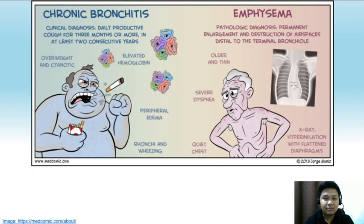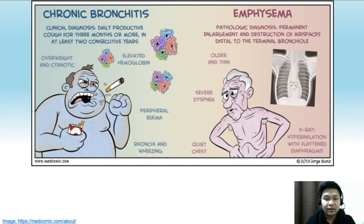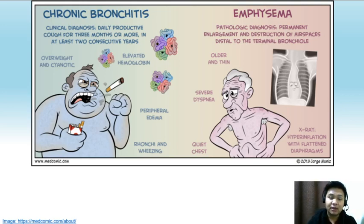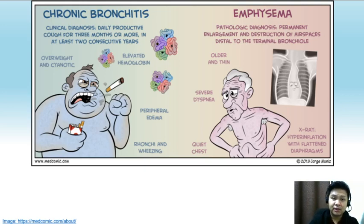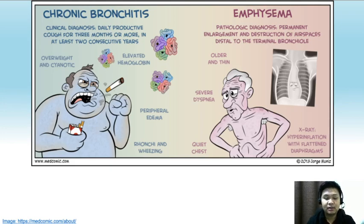This picture compares the two forms of COPD: chronic bronchitis and emphysema. Patients with chronic bronchitis are described as blue bloaters, while patients with emphysema are described as pink puffers.